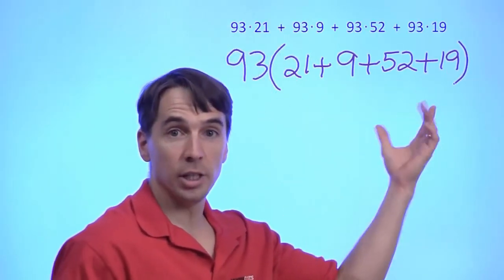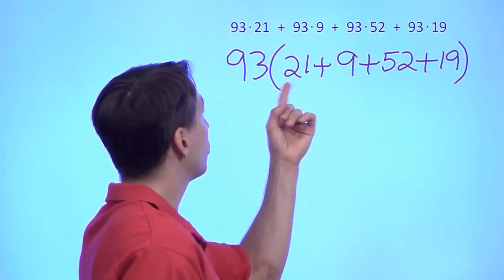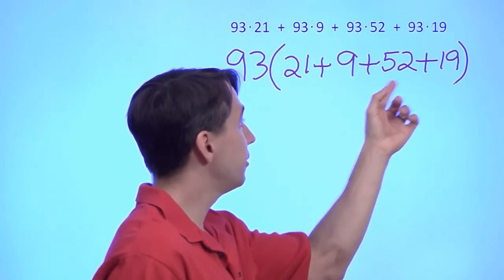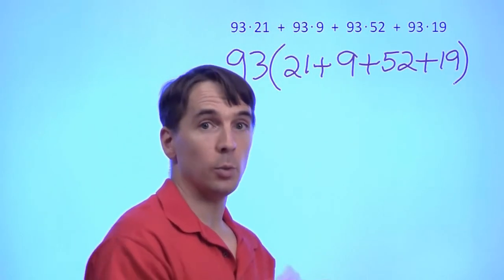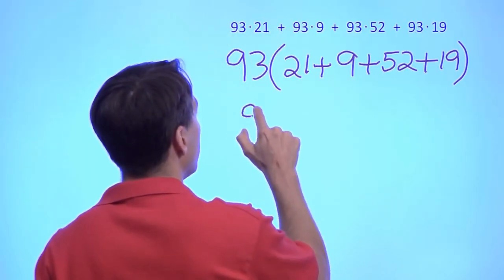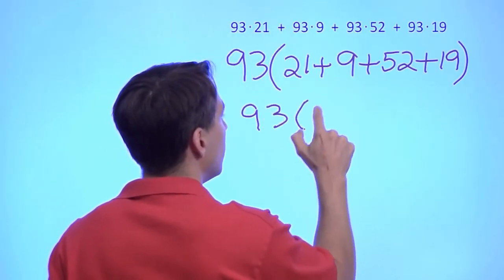And that's a lot easier to deal with. We can add these up in our head. 21 plus 9, that's 30. 52 plus 19 is 71. 30 plus 71, that's 101. So this is just 93 times 101.